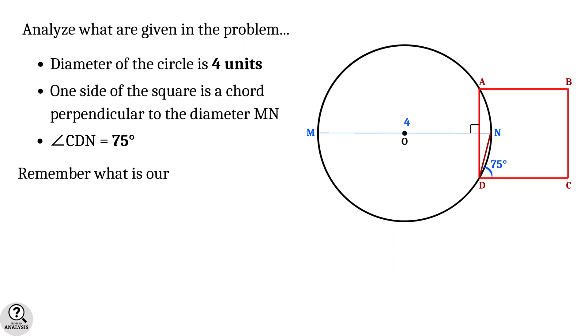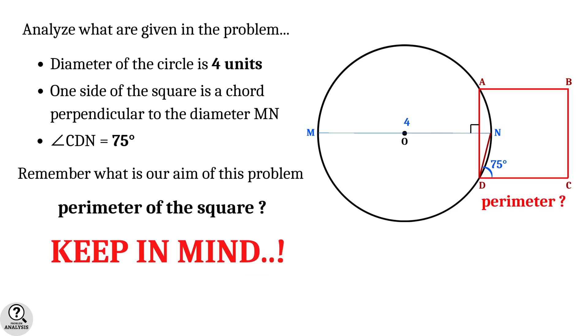Now, remember what is our aim of this problem? It is nothing but to find the perimeter of the square. This is the structure of our problem. So always keep in mind.